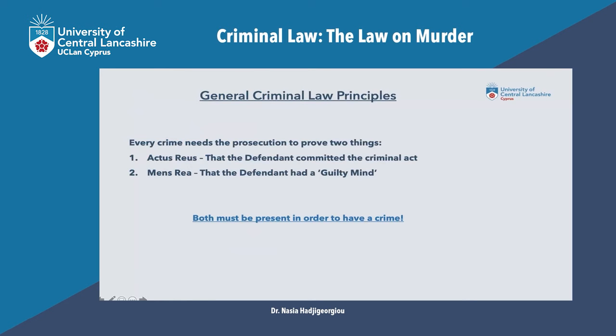So what do these mean? In order for the prosecution to successfully prove the existence of a crime, they must prove that the defendant had the actus reus and that the defendant also had the mens rea. The actus reus is the defendant's act during a crime and the mens rea is the defendant's guilty mind. So the prosecution has to prove both that the defendant did something and that the defendant was thinking of something at the time he was committing the crime.